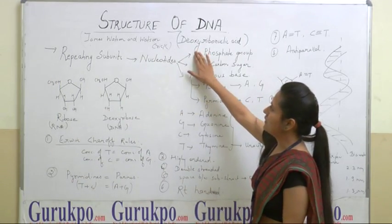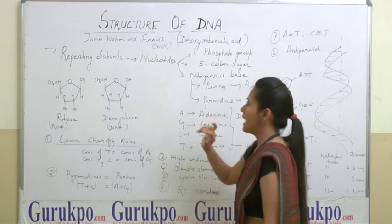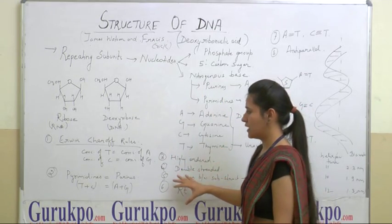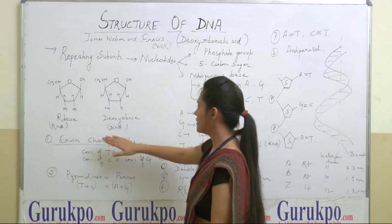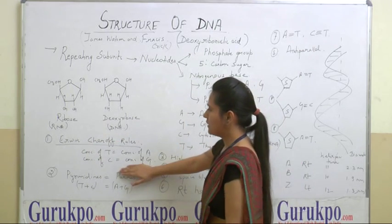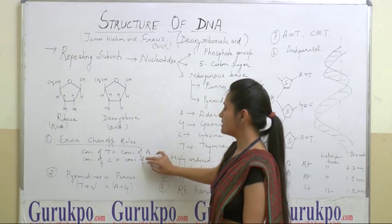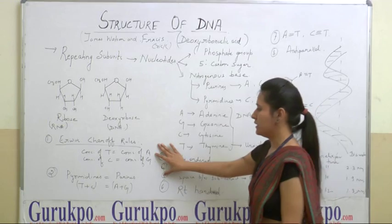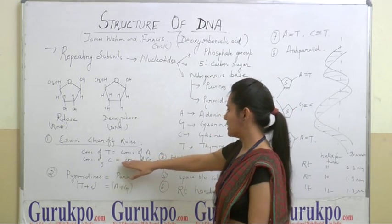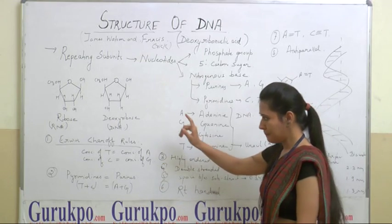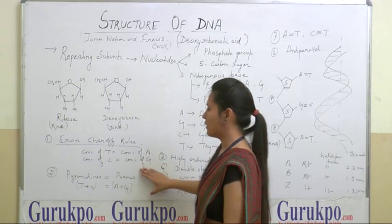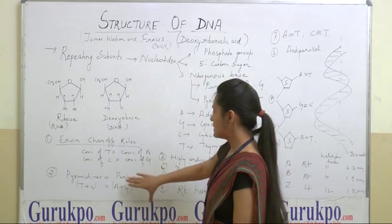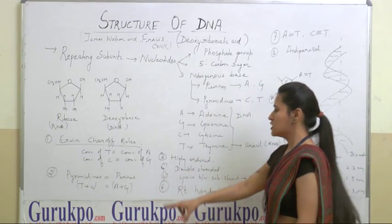This structure was given by James Watson and Crick, and there were certain rules implemented to discuss the overall structure of DNA. These are also called Chargaff's rules. Rule number one: the concentration of T is always equal to the concentration of A, that is thymine is always equal to adenine. Similarly, the concentration of C — cytosine — is equal to the concentration of G, that is guanine. Rule number two: the number of purines will be equal to the number of pyrimidines. Pyrimidines are T plus C, and purines are A plus G, so they will be equal.